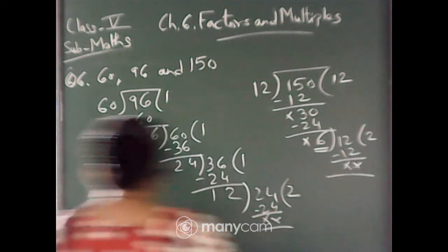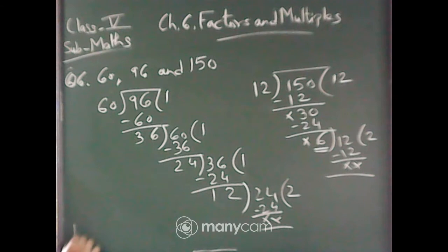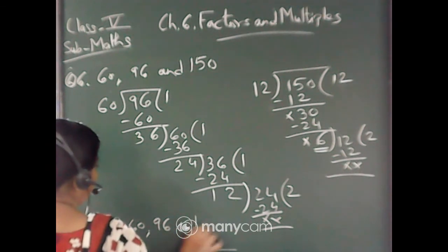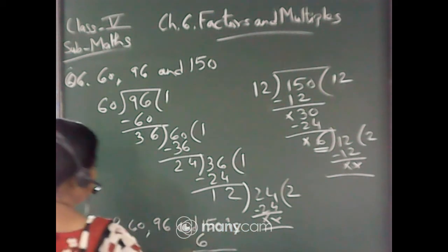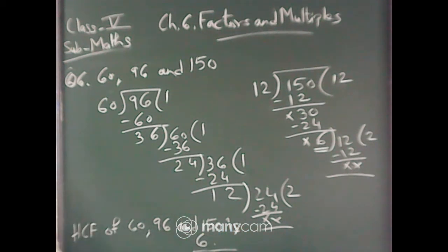So you will write at the bottom, HCF of 60, 96, and 150 is 6. See, since my board is small, that is why I am writing like this. Now let us do one more. This one was a, let us do number c.